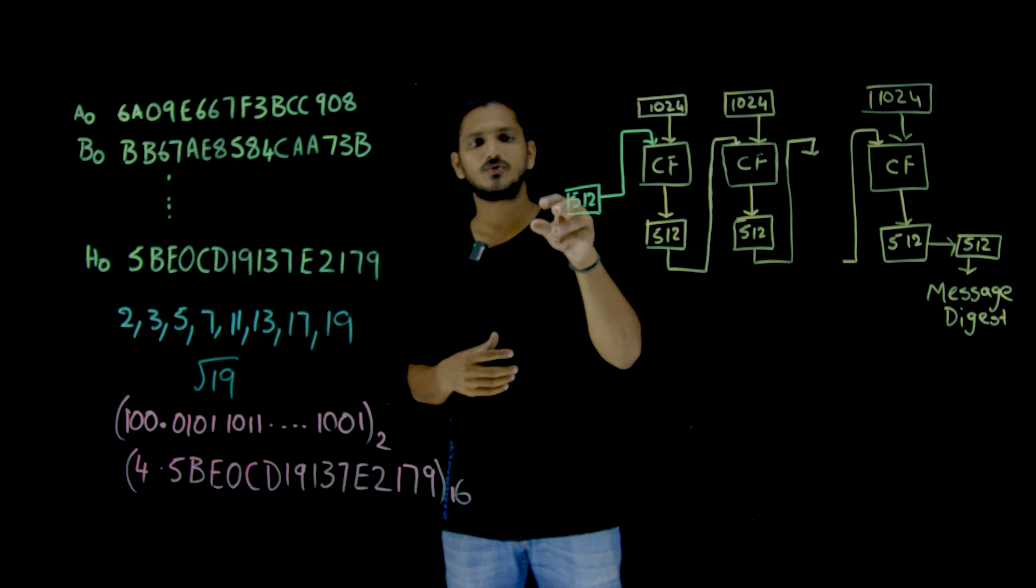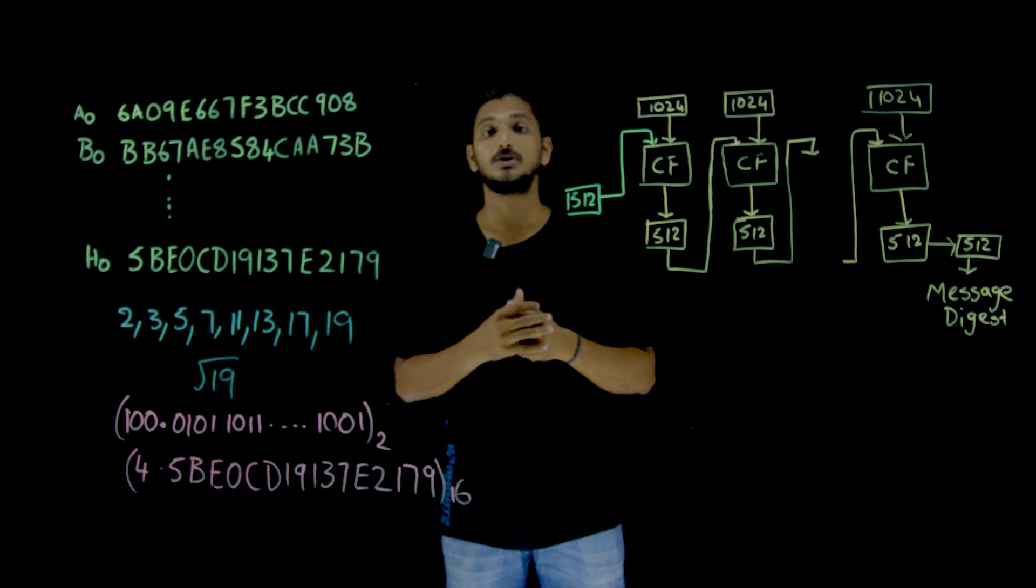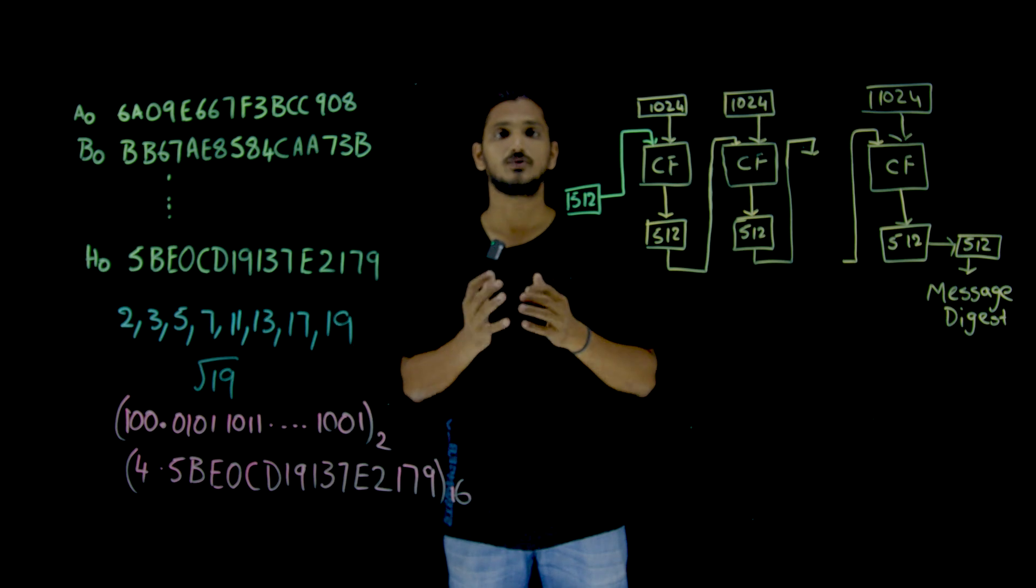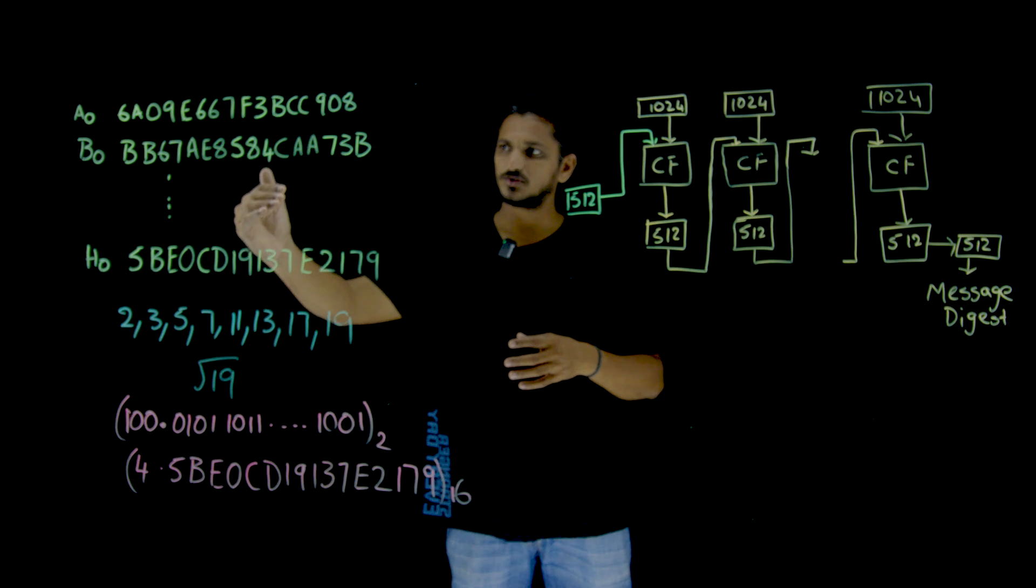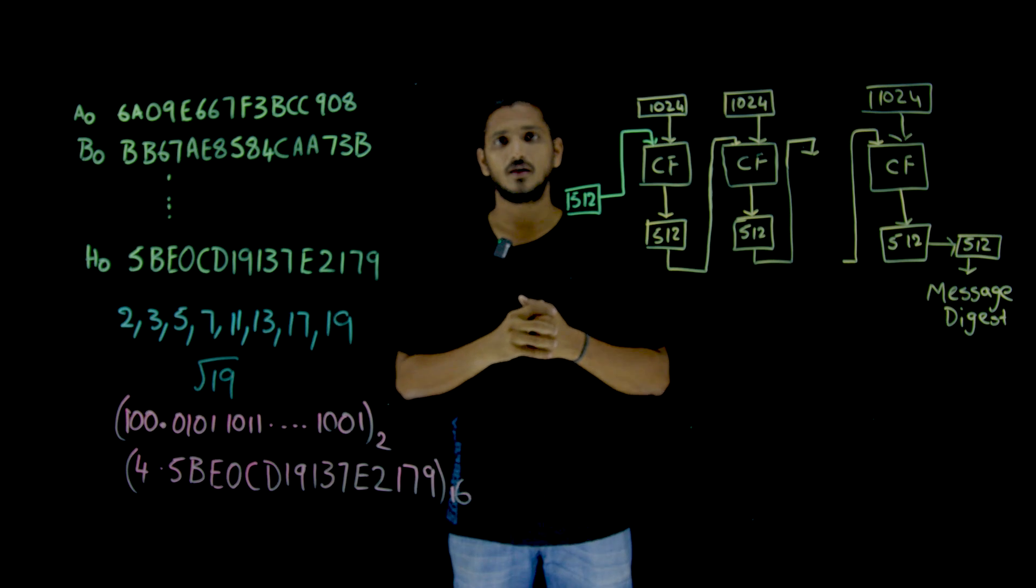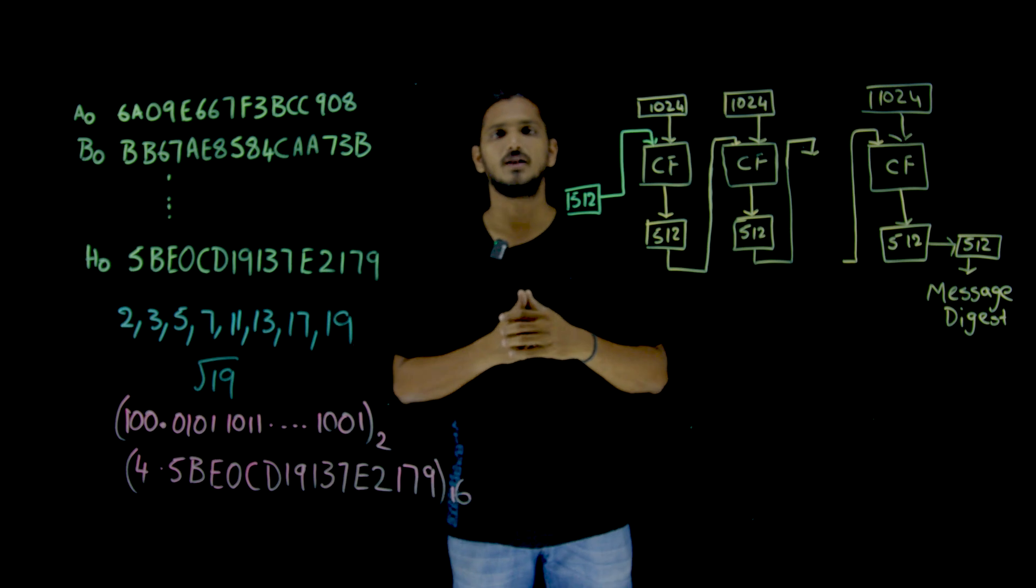Hope you understand how we got this first 512 bits initialization values. If you have any questions regarding the concept, please post your questions in the comment section below. Thanks for watching. The remaining values are shown in our website learningmonkey.in. There we have provided the table, the complete values.